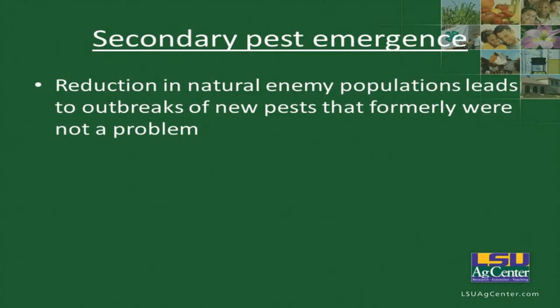Secondary pest emergence occurs when a reduction in natural enemy populations leads to outbreaks of new pests that formerly were not a problem. In cotton, for example, we've removed the boll weevil, and by using BT cotton we've removed lepidopteran pests like corn earworm and fall armyworm. Instead, lygus species — our plant bugs — have emerged as a secondary pest that was formerly not a problem.